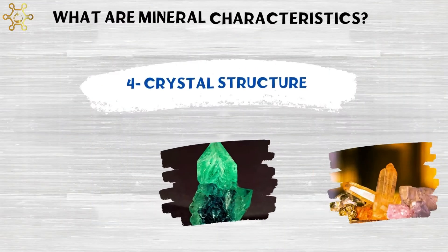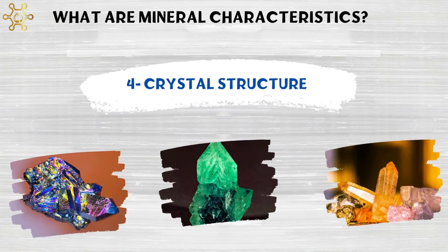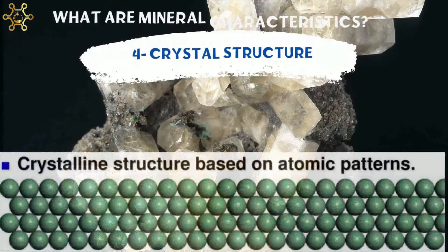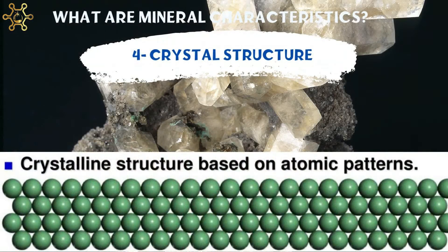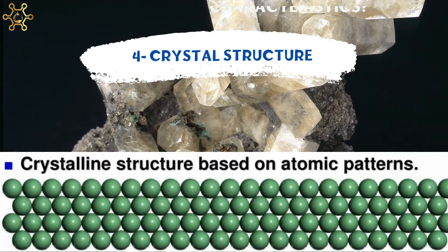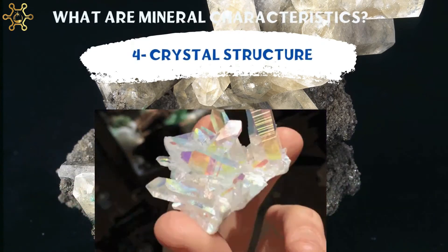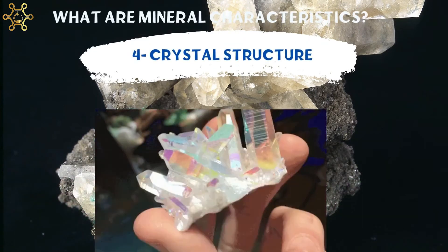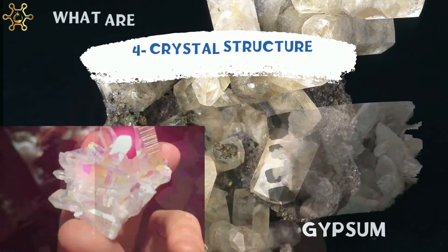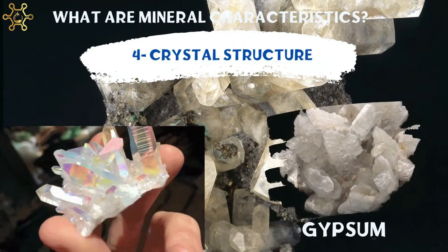Number 4: Crystal structure. The particles of a mineral line up in a pattern that repeats over and over again. The repeating pattern of a mineral's particles forms a solid called a crystal.